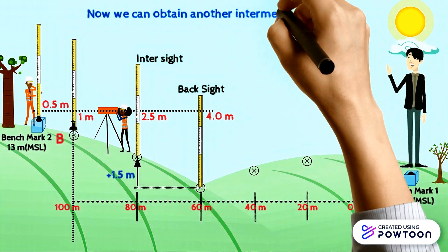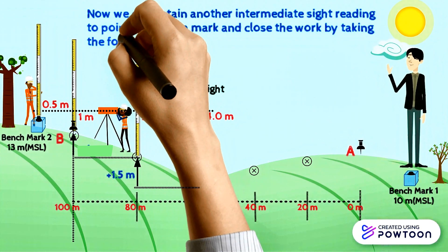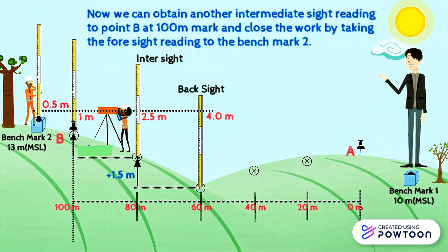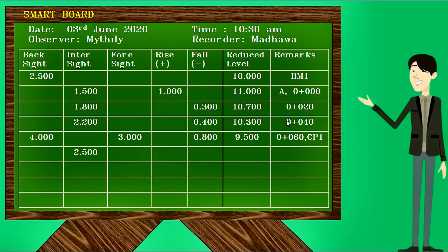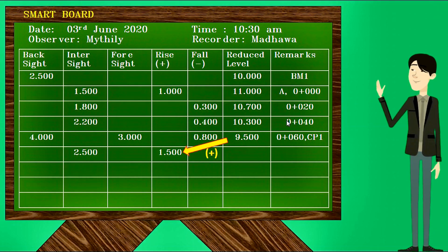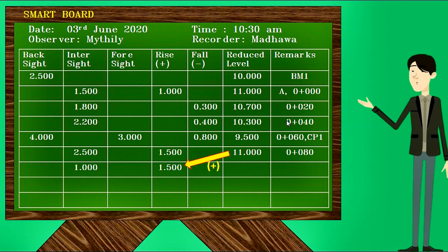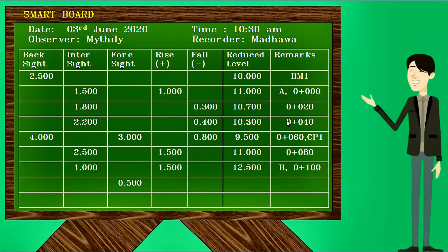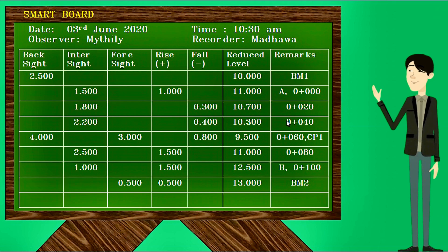We obtain another intermediate sight reading to point B at the 100 meter mark and close the work by taking the foresight reading to benchmark 2. Record the readings at 80 meters and 100 meters in the intersight column, calculate the rise or fall value and reduced level accordingly. Finally, close the level line by taking the foresight reading to benchmark 2, recording the final value in the foresight column and doing the calculations accordingly.